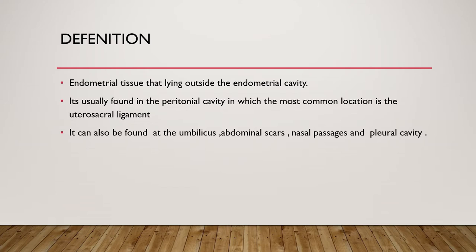It is usually found in the peritoneal cavity and predominantly it is found in the pelvis. The most common site is the uterosacral ligament, but it's also found in other locations such as the umbilicus, the abdominal scars, the nasal passages, and the pleural cavity. There have been reports of patients complaining of hemoptysis who were found to have endometriosis — an unusual location for this condition.